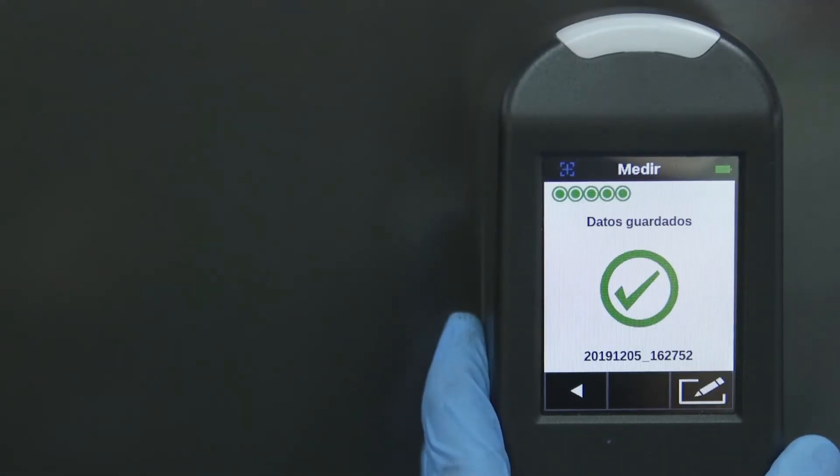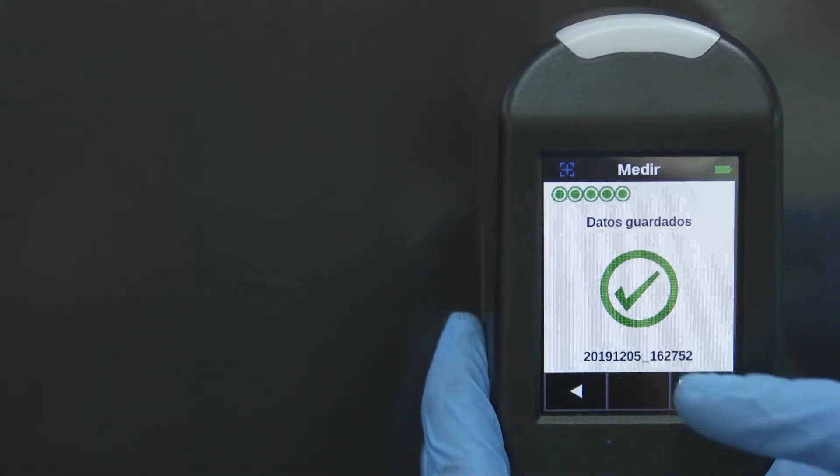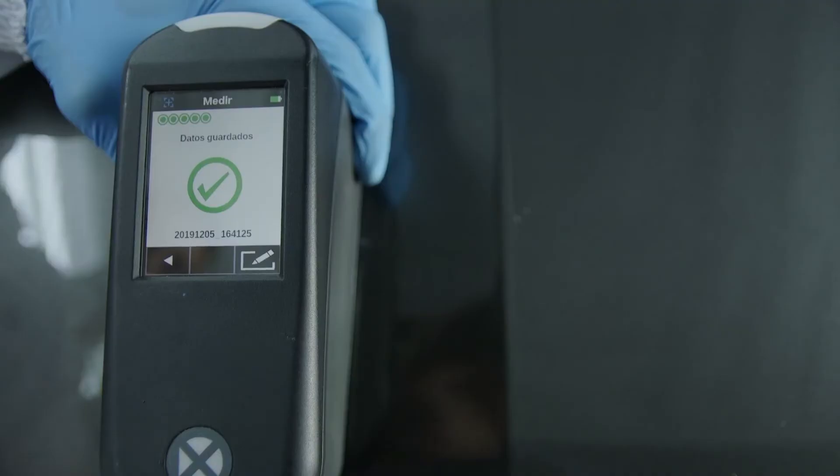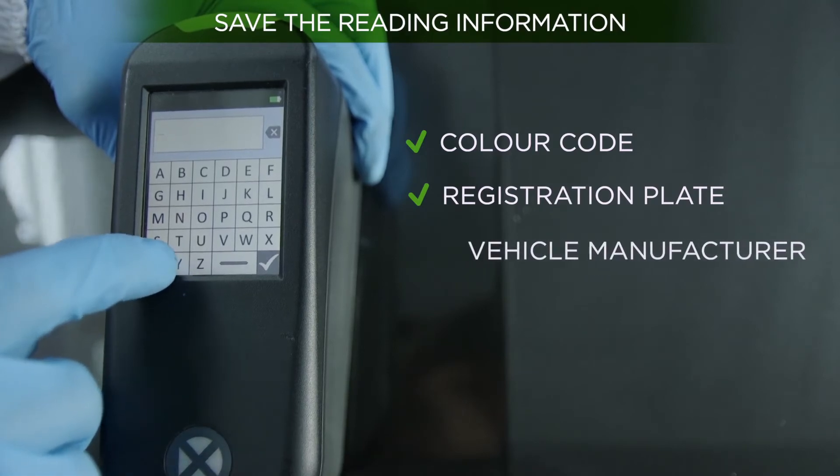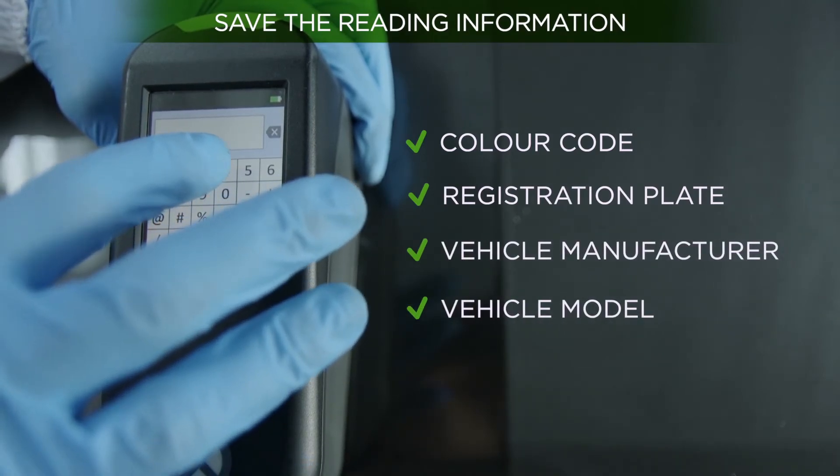Later, once the measurement is finished, save the reading information by clicking on the pencil icon. The information that we can save will be color code, registration plate, vehicle manufacturer, and vehicle model.